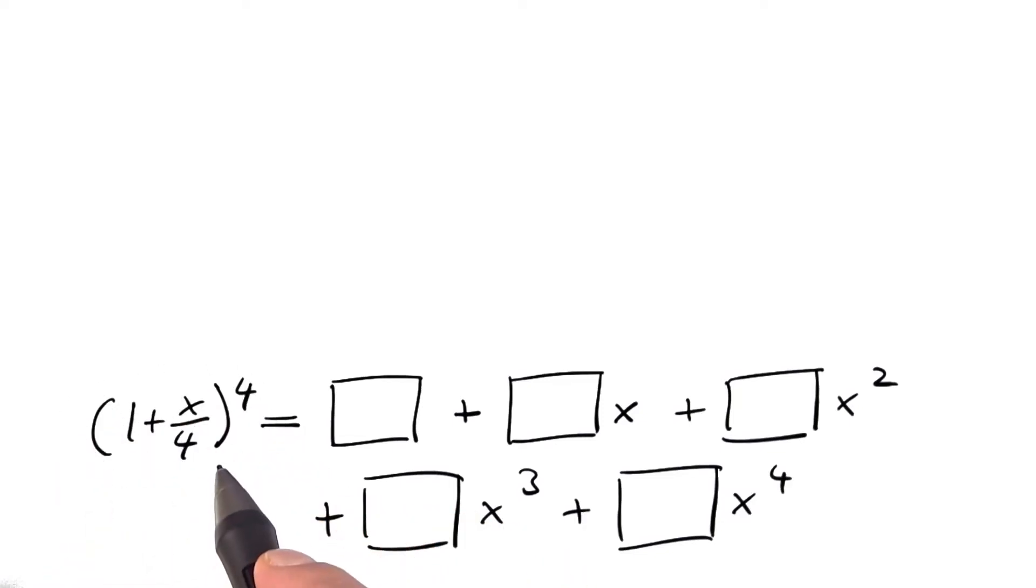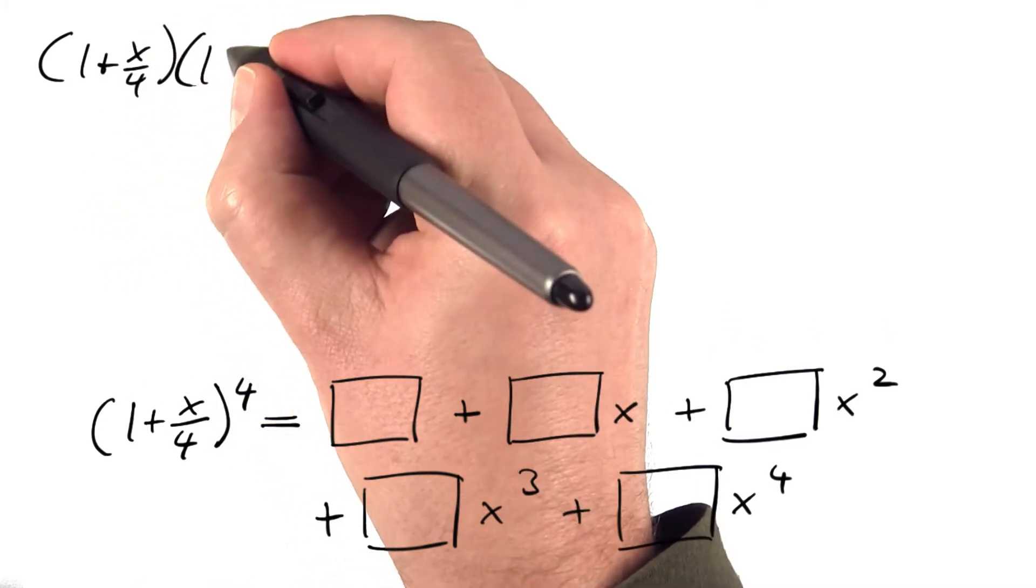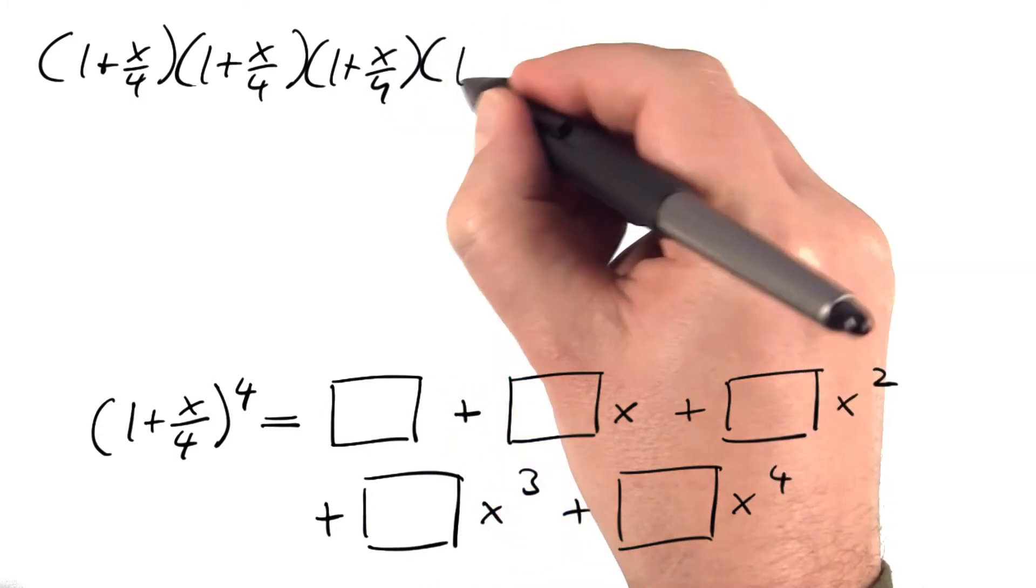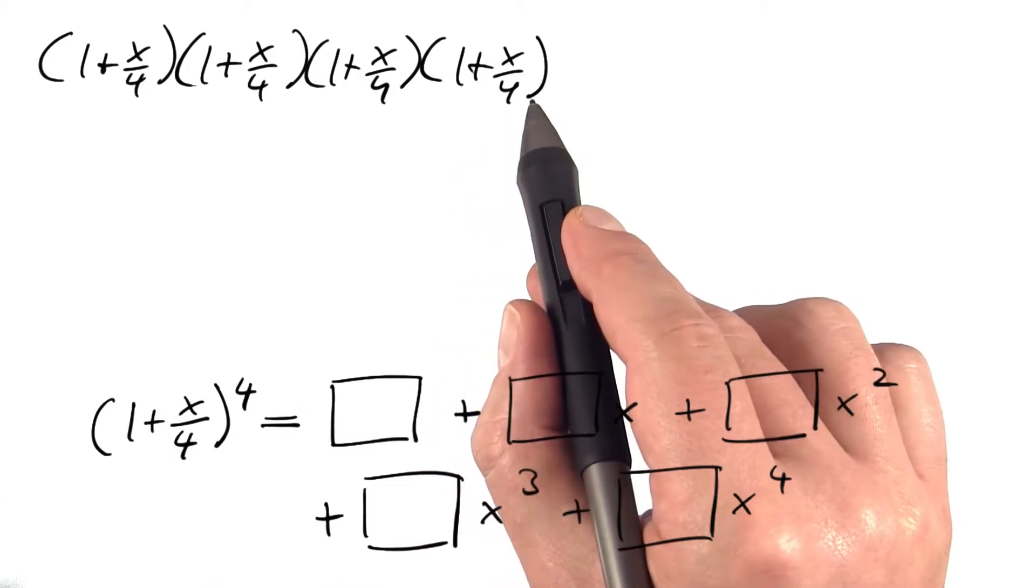So what happens here is that we write down four equal factors: (1 + x/4)(1 + x/4)(1 + x/4)(1 + x/4). And then we look at what this is going to turn into.